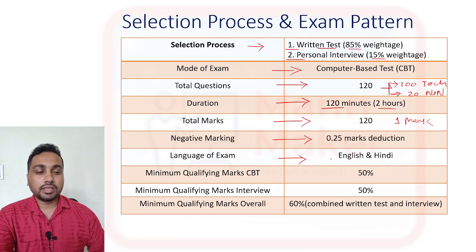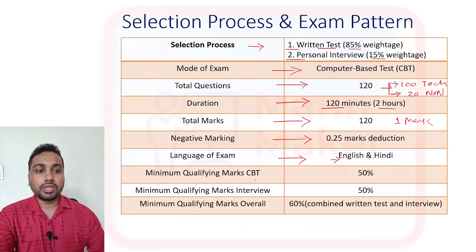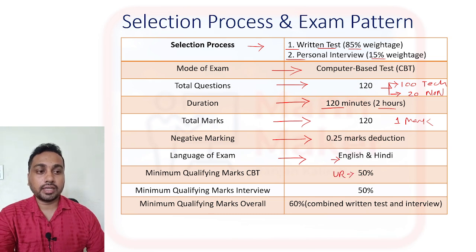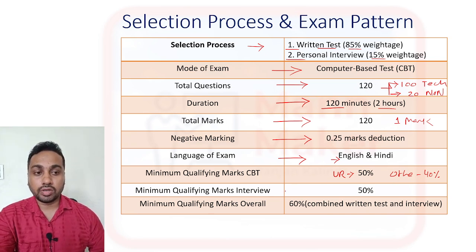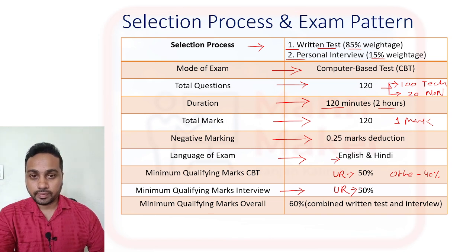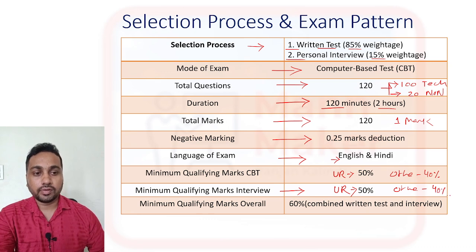The language of the exam will be available in both English and Hindi. For minimum qualifying marks in the CBT, for the general category it will be 50% and for other categories it will be 40%. You need to cross 40% or 50% to qualify in the CBT. Similarly, for the interview, you need to score above 50% for general category and 40% for other categories.